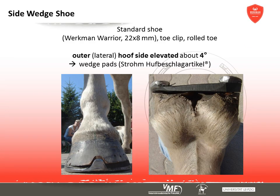The side wedge shoe is a modification affecting the partial height on a medial lateral level. In the current study, the four degree elevation of the lateral hoof half was realised with a wedge pad between hoof capsule and horseshoe. The addition of material to the lateral branch or the application of unilateral wedges may lead to similar results; however, both mentioned variations create a significantly heavier horseshoe.